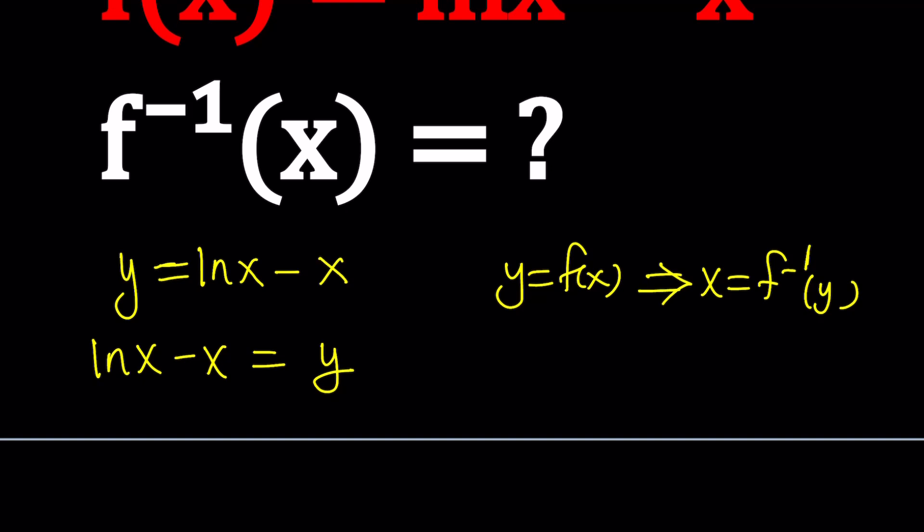So we're going to take it from here, ln(x) - x = y. And again, our goal is to solve for x. When we solve for x, we're going to be finding x = f^(-1)(y). But since we do need f inverse in terms of x, we're just going to switch the variables. And you can always do that.